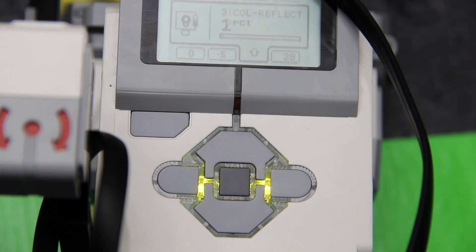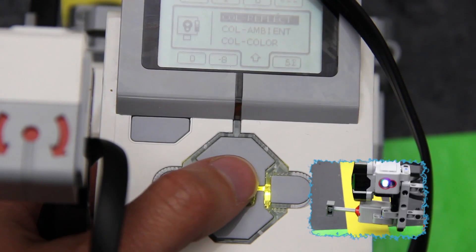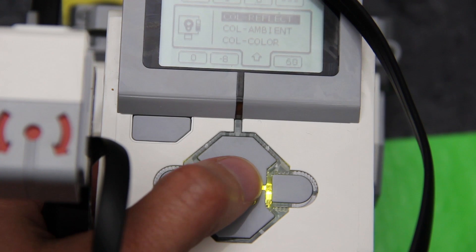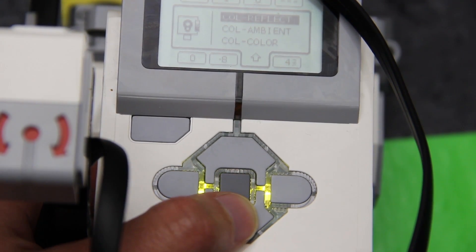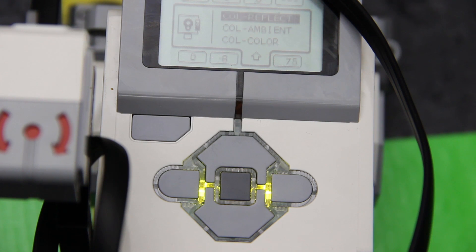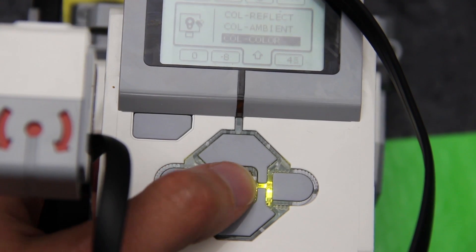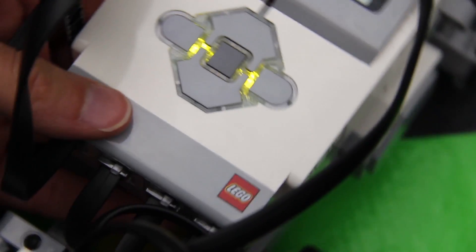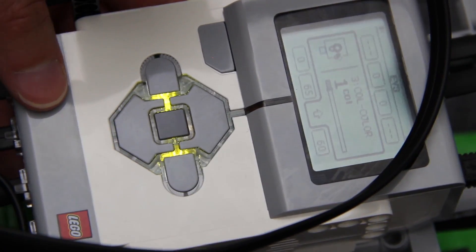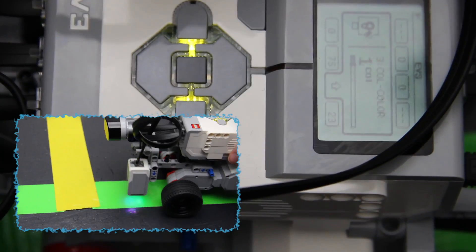The third sensor is the color sensor. There's a few different ways you can use the color sensor. You can look at the reflected light off the surface, the ambient light in the room, or something that they call color where they've lumped everything together from 0 to 7. That's one of the ones we're going to use most often. So you can see when we move it over to the green line on the course from the black it goes from 1 to 3.